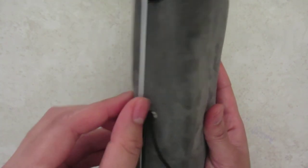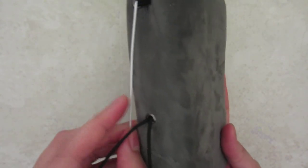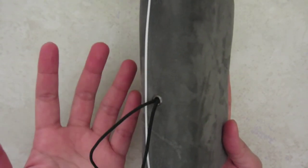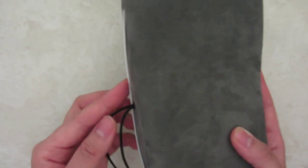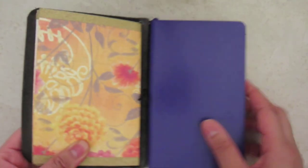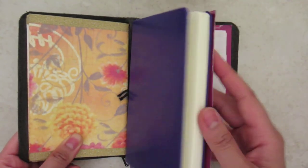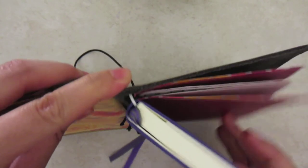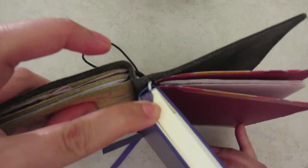And this white string that you see here is not from there. I put that afterwards. This is the only string I have. I don't have a black string. If I did, I would have done a black string. It's just basically holding the notebook in place. Now that I'm looking at it, I restringed it. I just put it through the spine here.